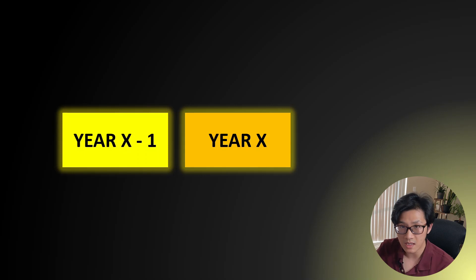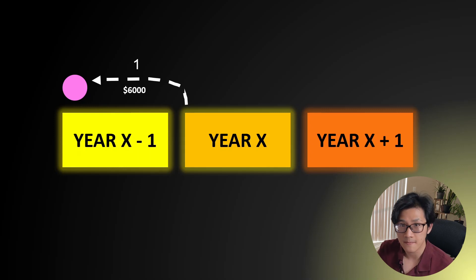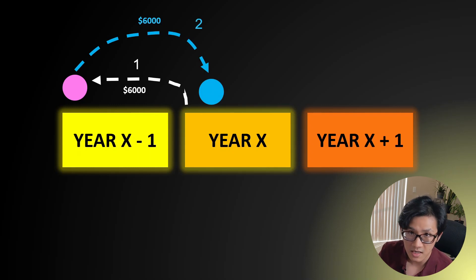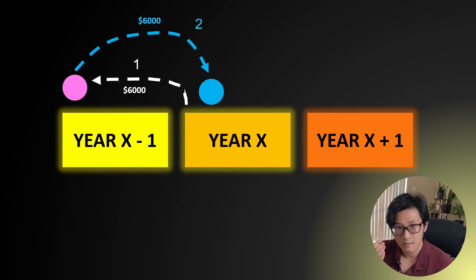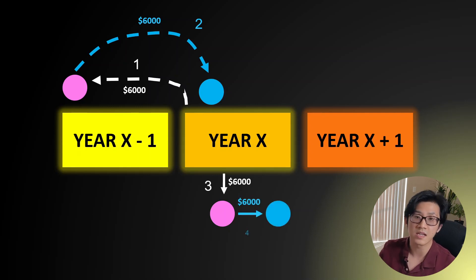Before we dive in, we need to set up the scenario. Starting from the perspective of time, let's consider three years: year X, year X minus one, and year X plus one. You contributed $6,000 to your traditional IRA for year X minus one in year X — let's call this action one — and then converted that $6,000 to a Roth IRA in year X, action two. That's the late backdoor Roth IRA conversion. You also perform a normal backdoor Roth IRA in year X: contributing $6,000 to a traditional IRA in year X — action three — and converting it to Roth IRA in year X — action four.